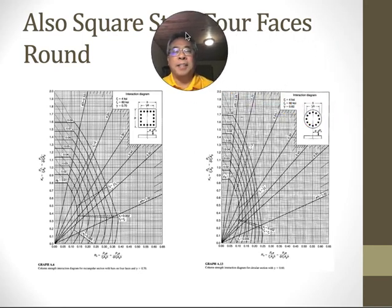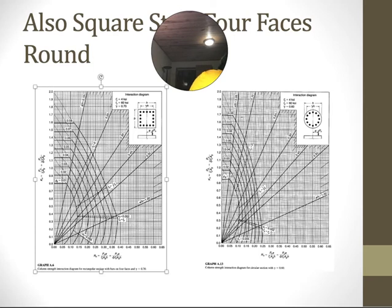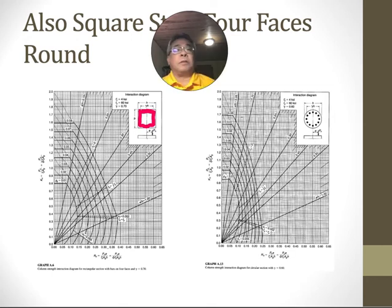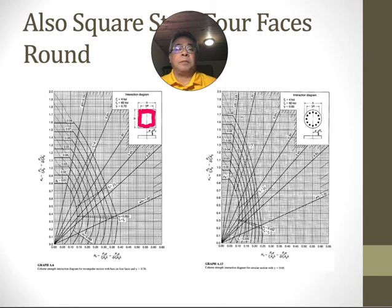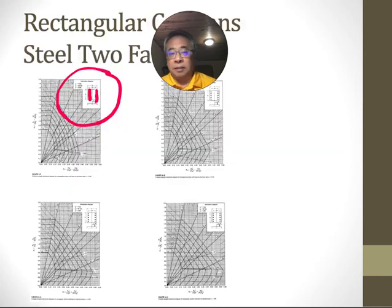That's the kind of column that is in contrast to this. Here are other interaction diagrams in the book. Down here is a round one and here is a square one, but in this case the steel is on all four sides. The percentage of steel is divided among four sides compared to just two sides.